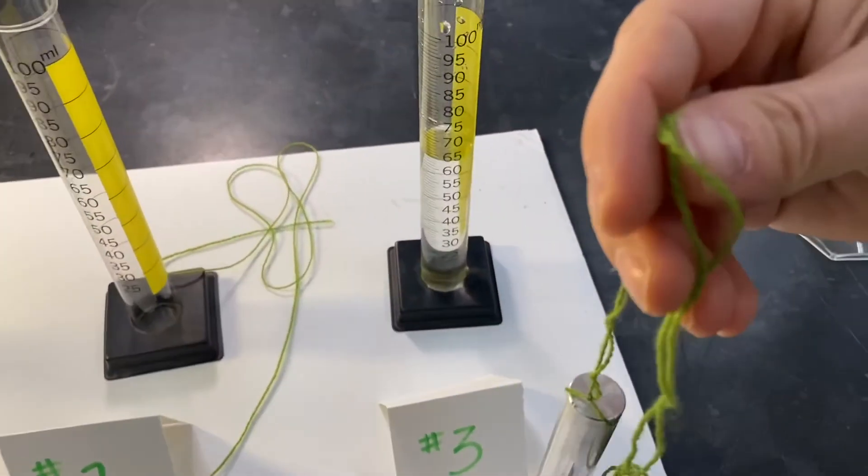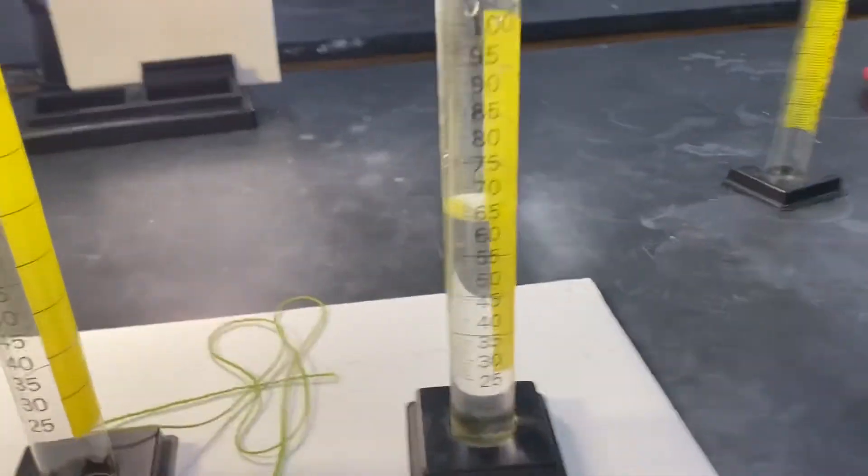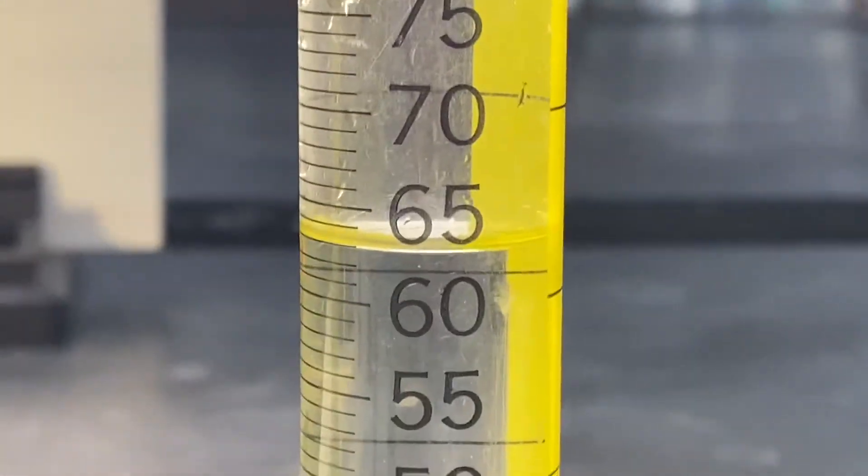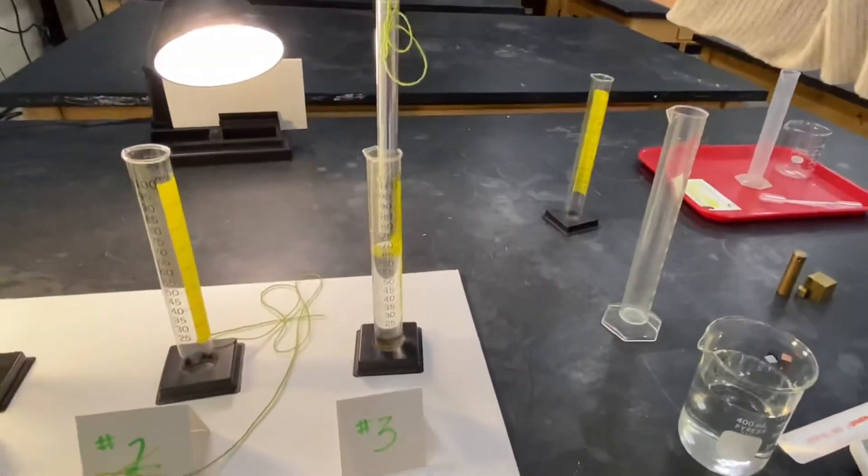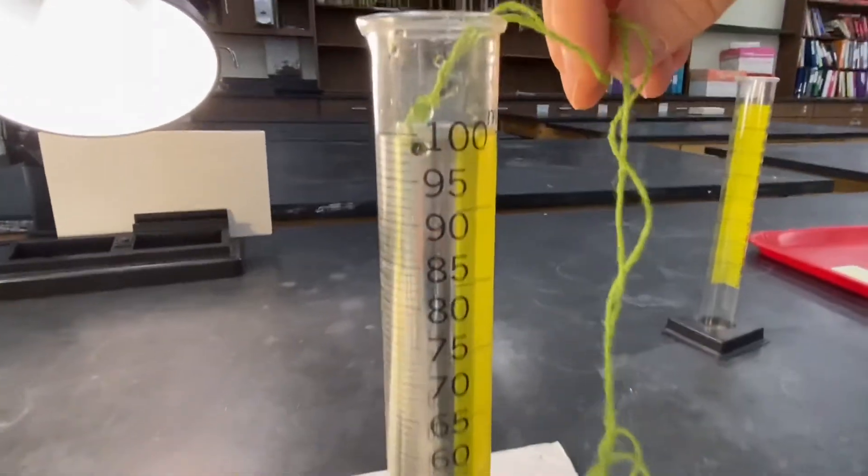So now we're going to calculate the volume of number three cylinder through volume of water displacement. I'm going to just get the volume there. 63, a hundred.